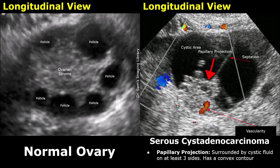A papillary projection is surrounded on its three sides by cystic fluid — one, two, and three. It is a solid tissue growth arising from the cyst wall or septum, and projecting into the cyst lumen surrounded by cystic fluid on at least three sides. A solid component, in contrast, has only one side surrounded by fluid — it may form part of the wall, fill the cyst, or extend outside the cyst.